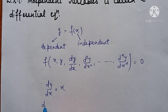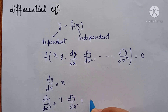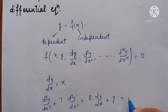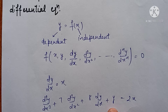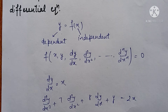One more example of a differential equation: suppose we have an equation of this kind. This is also a differential equation because here x, y, and all the derivatives — three derivatives of y with respect to x — are involved. So this is a differential equation of order 3.